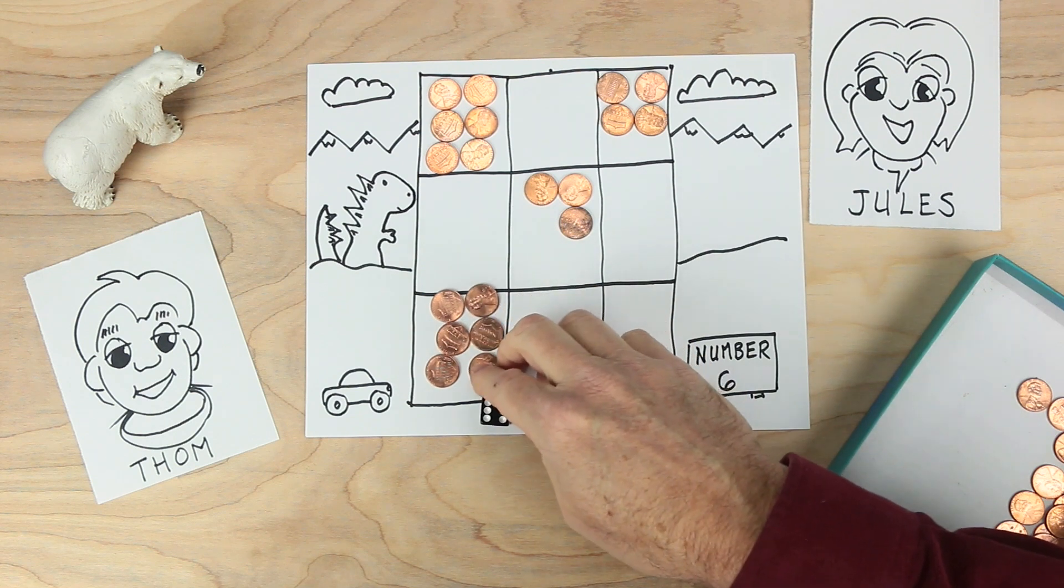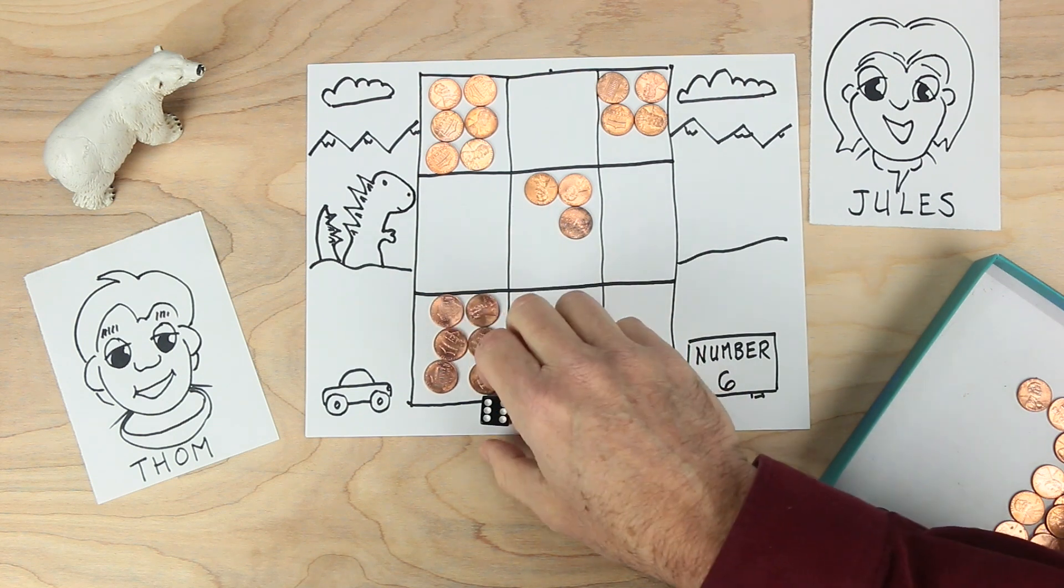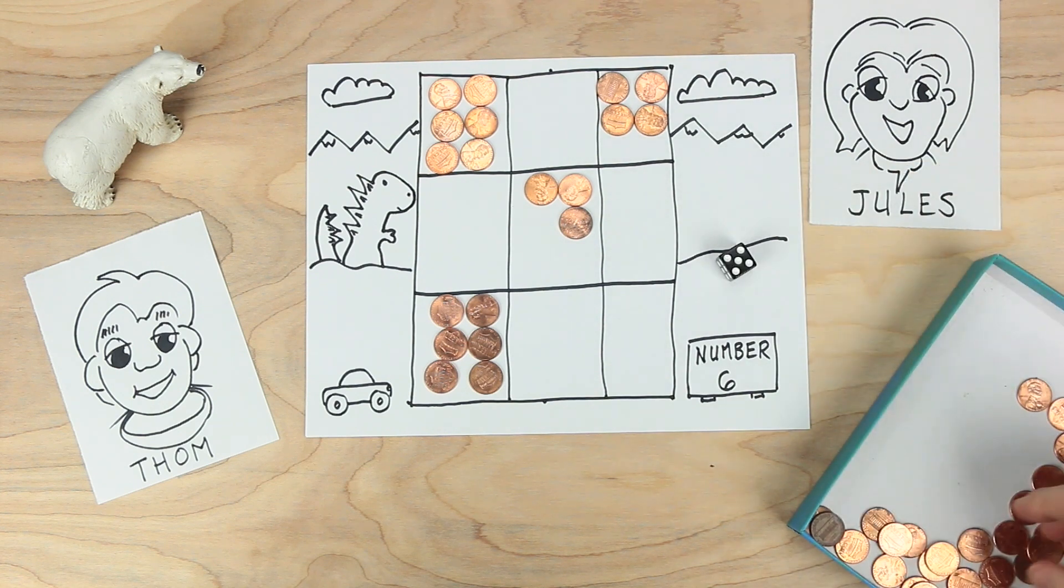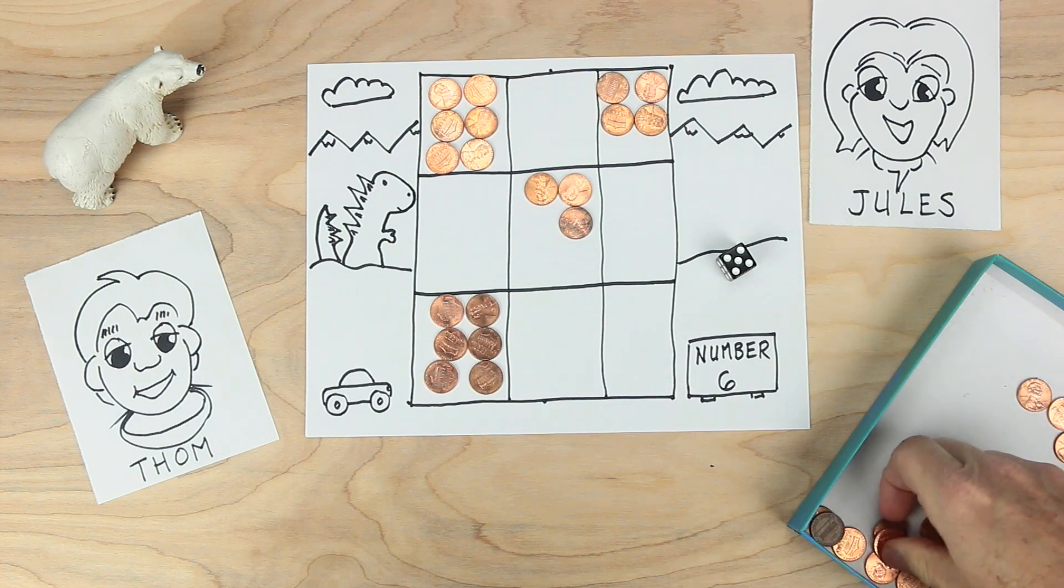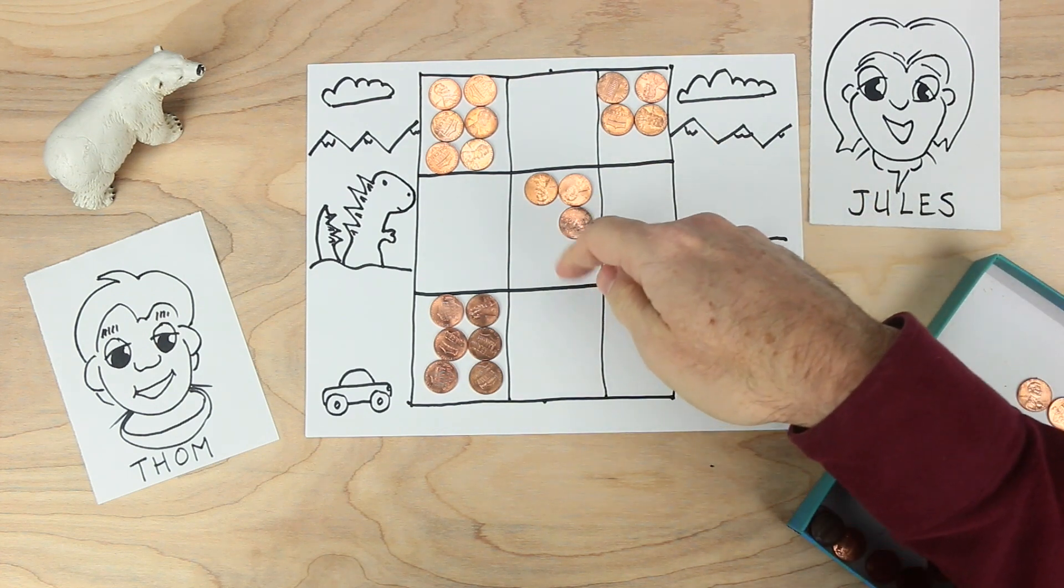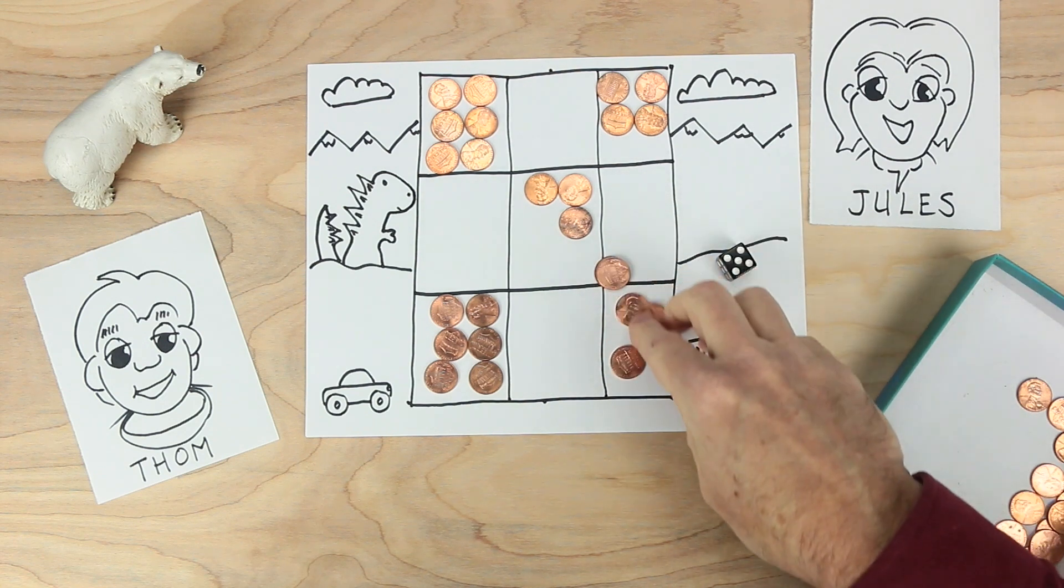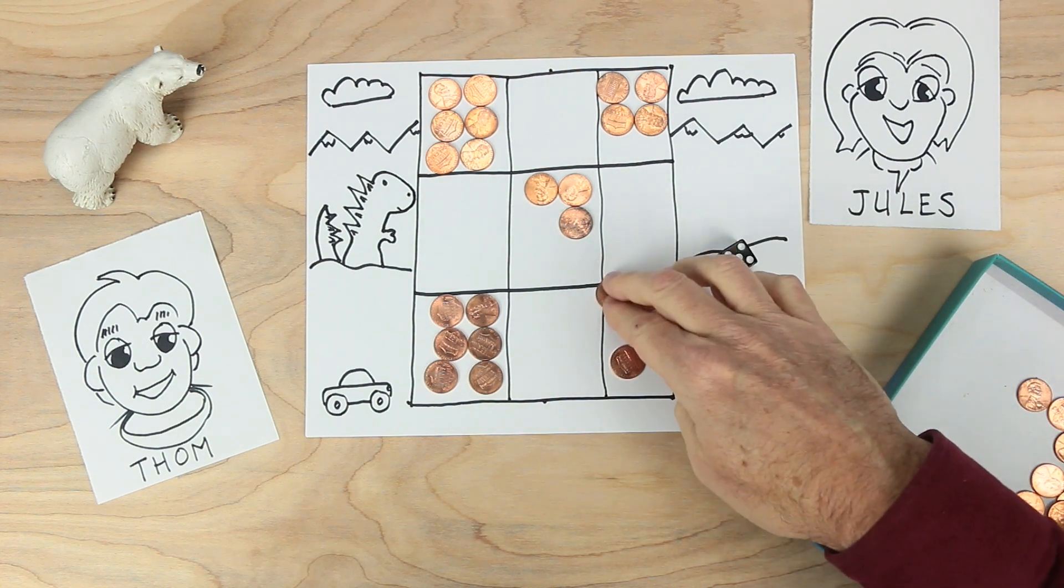Jules turn. Jules rolls a five. And you can see Jules cannot put five in this corner or there. But these other empty boxes can have five. So Jules decides to put five coins down in this box here.